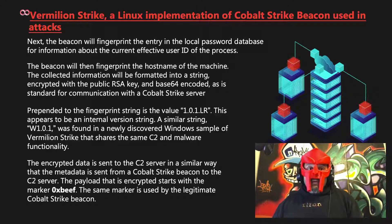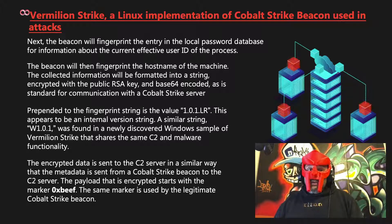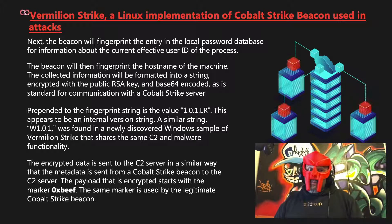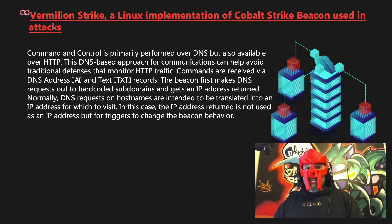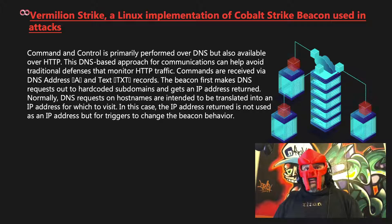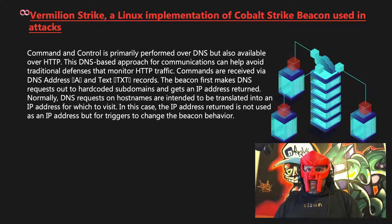The encrypted data is sent to the command and control server in a similar way that metadata is sent from the Cobalt Strike beacon. The payload that is encrypted starts with the marker 0xBEEF — the same marker used by the legitimate Cobalt Strike beacon. Command and control is primarily performed over DNS but also available over HTTP. This DNS-based approach for communications can help avoid traditional defenses that monitor HTTP traffic.